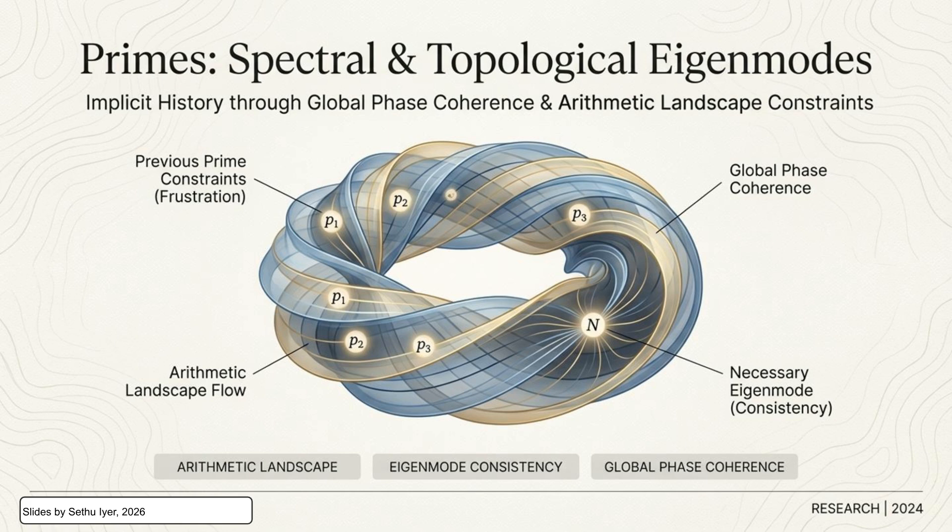Primes are spectral and topological eigenmodes, displaying implicit history through global phase coherence and arithmetic landscape constraints. This model connects previous prime constraints, or frustration, to global phase coherence and necessary eigenmode consistency.